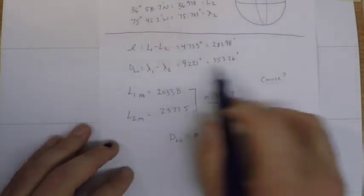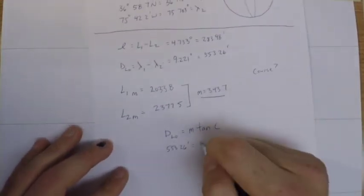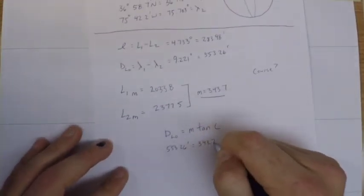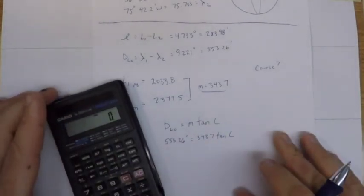And so my difference in longitude was 553.26, and that's going to equal my meridional parts times the tangent of what I'm looking for. So I will go ahead and do that.